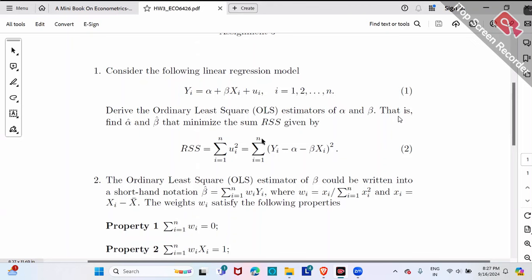To minimize RSS, derive those two partial derivatives - partial derivative to alpha, partial derivative to beta - set to be zero, so that solve those two equations, get our alpha hat or beta hat, right?